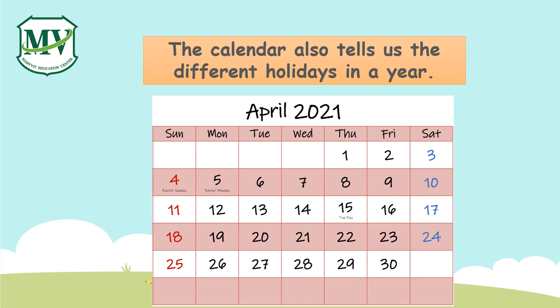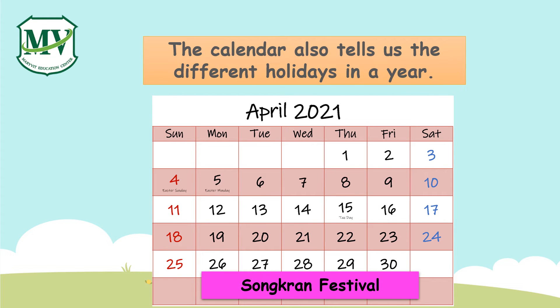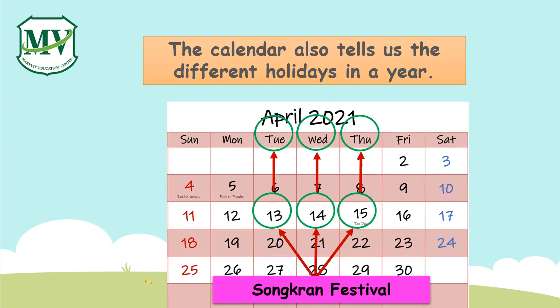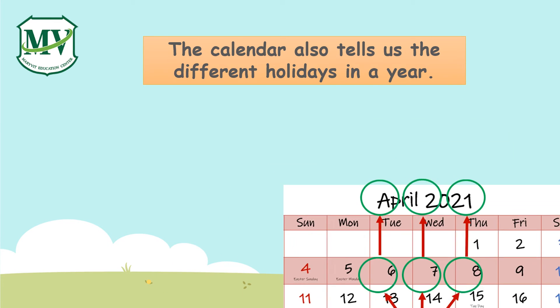On the month of April, we celebrate the Songkran Festival from the 13th to 15th of the month. And this year, it falls on Tuesday, Wednesday, and Thursday.